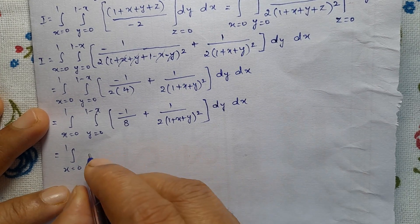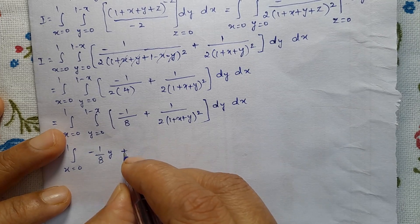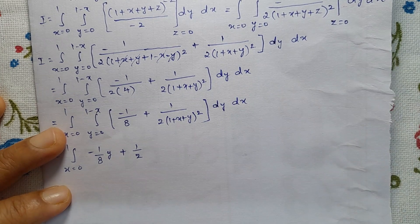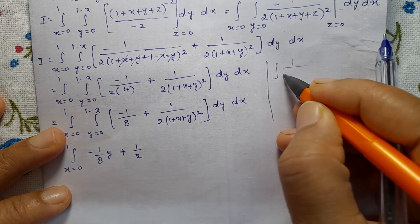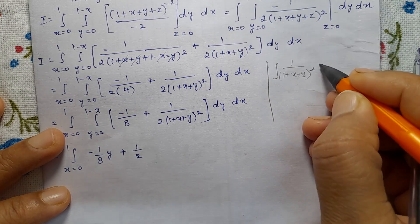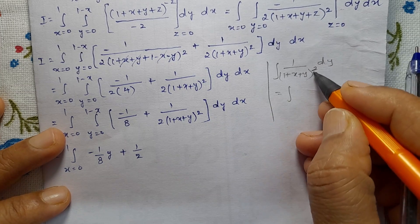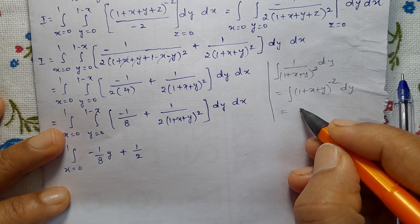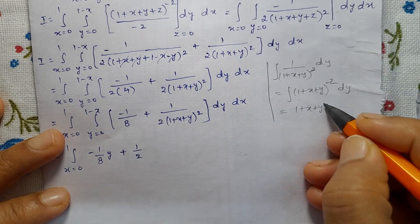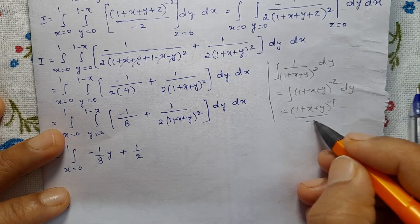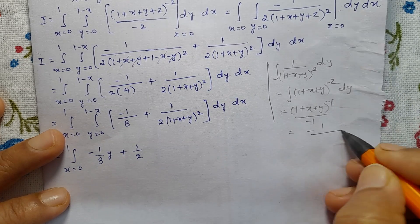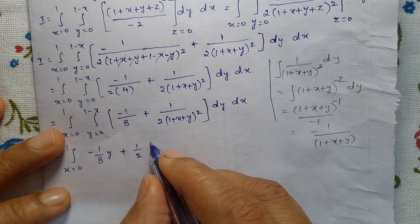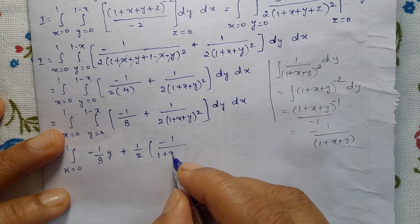Integrating with respect to y: the term minus 1/8 integrates to minus y/8. For the term 1 divided by 2(1 + x + y)^2: integrating gives minus 1 divided by 2(1 + x + y), since (1 + x + y)^(−2) integrates to (1 + x + y)^(−1)/(−1) times 1/2, giving minus 1 divided by 2(1 + x + y). Apply y limit from 0 to 1 minus x.